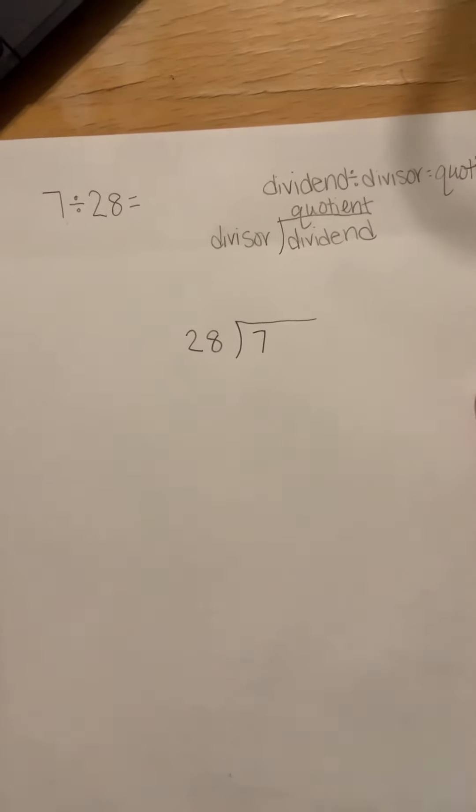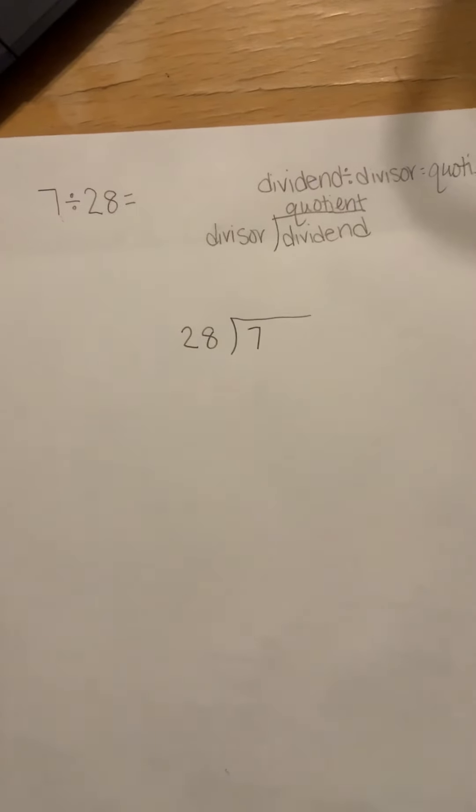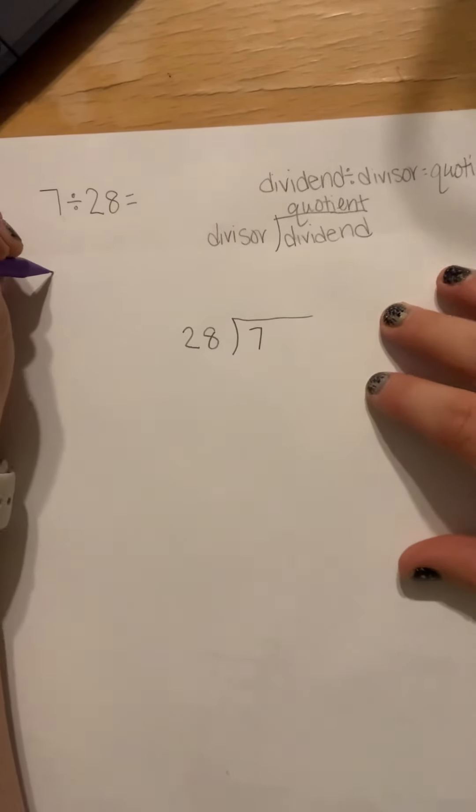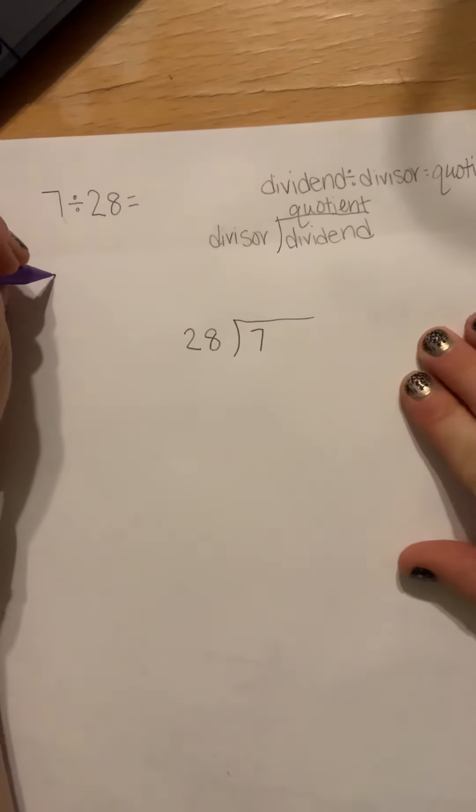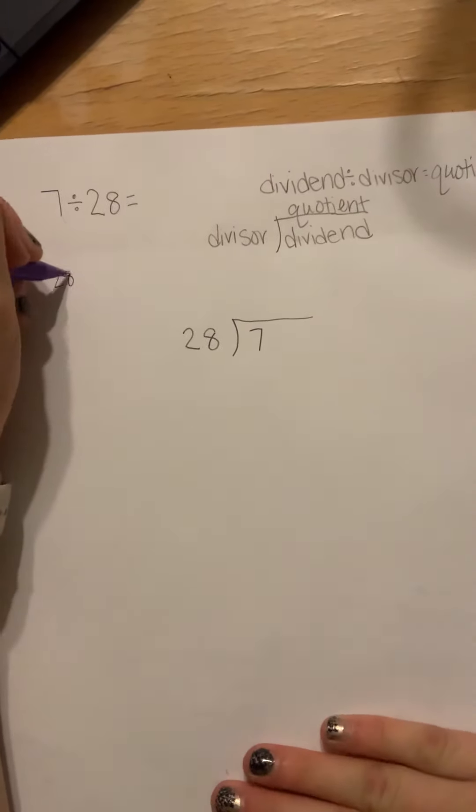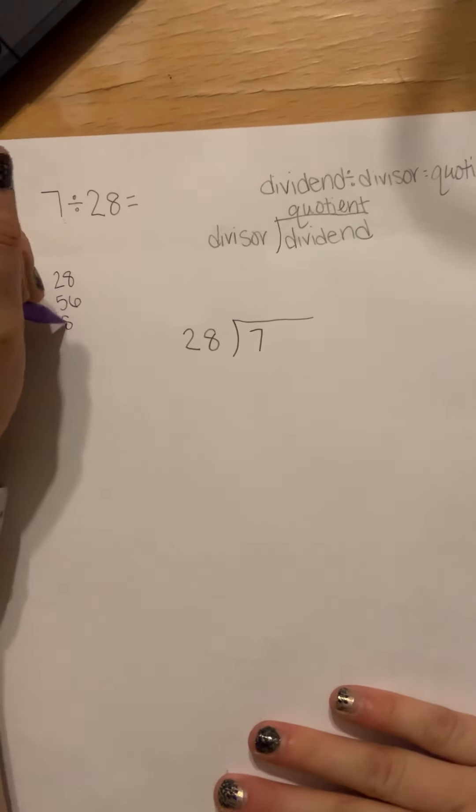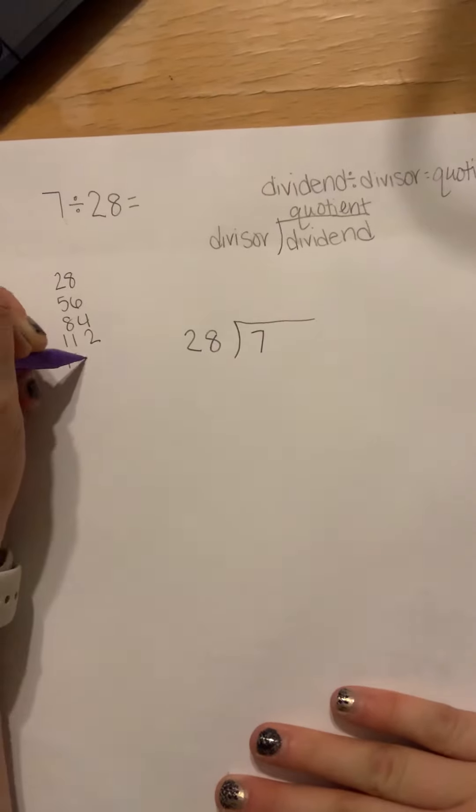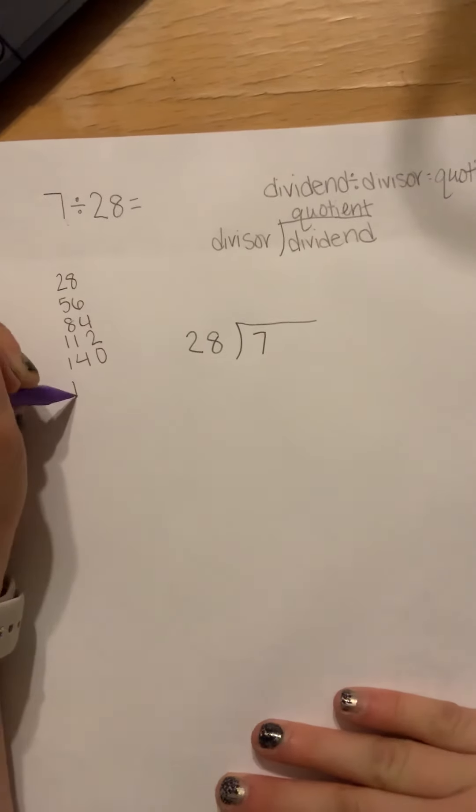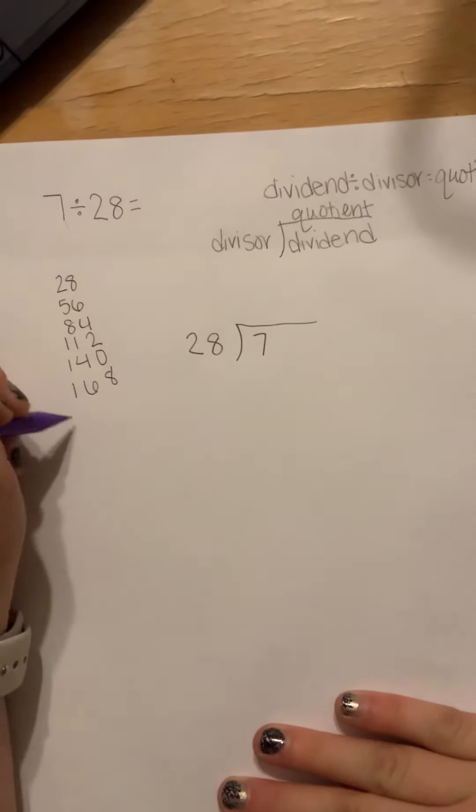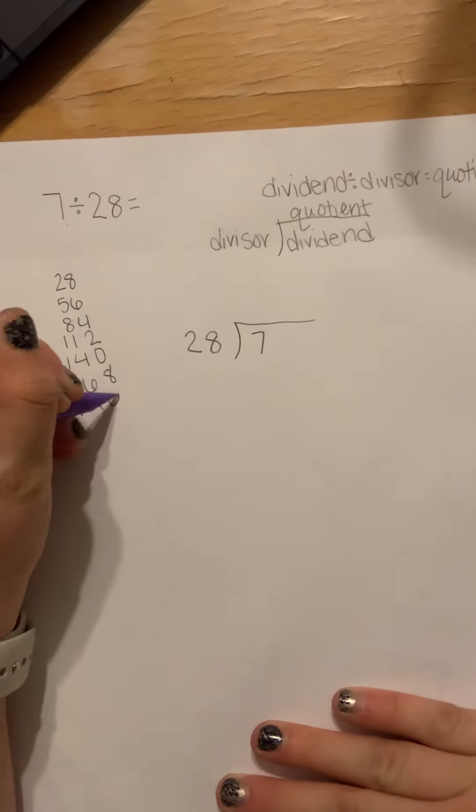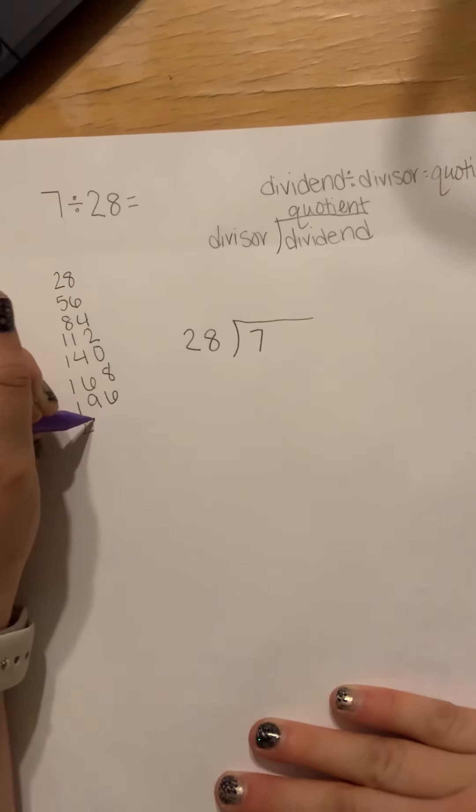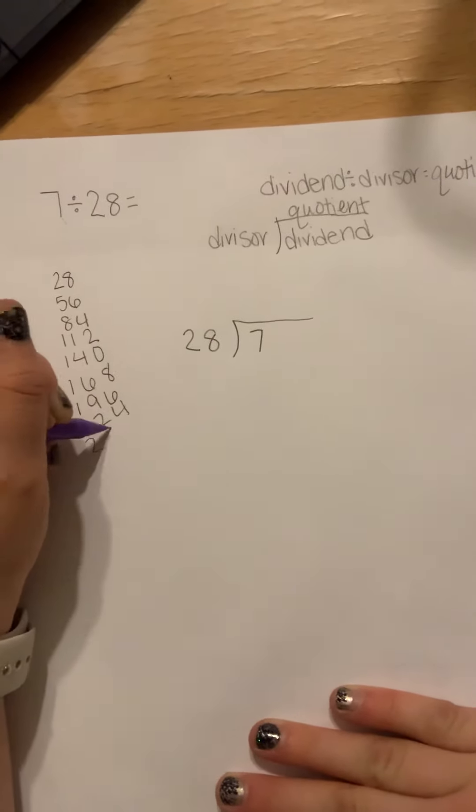And now I'm going to skip count by 28. And I'm going to do that just so it makes it a little bit easier for me while I'm going through the division process. So you're going to start with 28, 56, 84, 112, 140, 168, 196, 224, and 252.